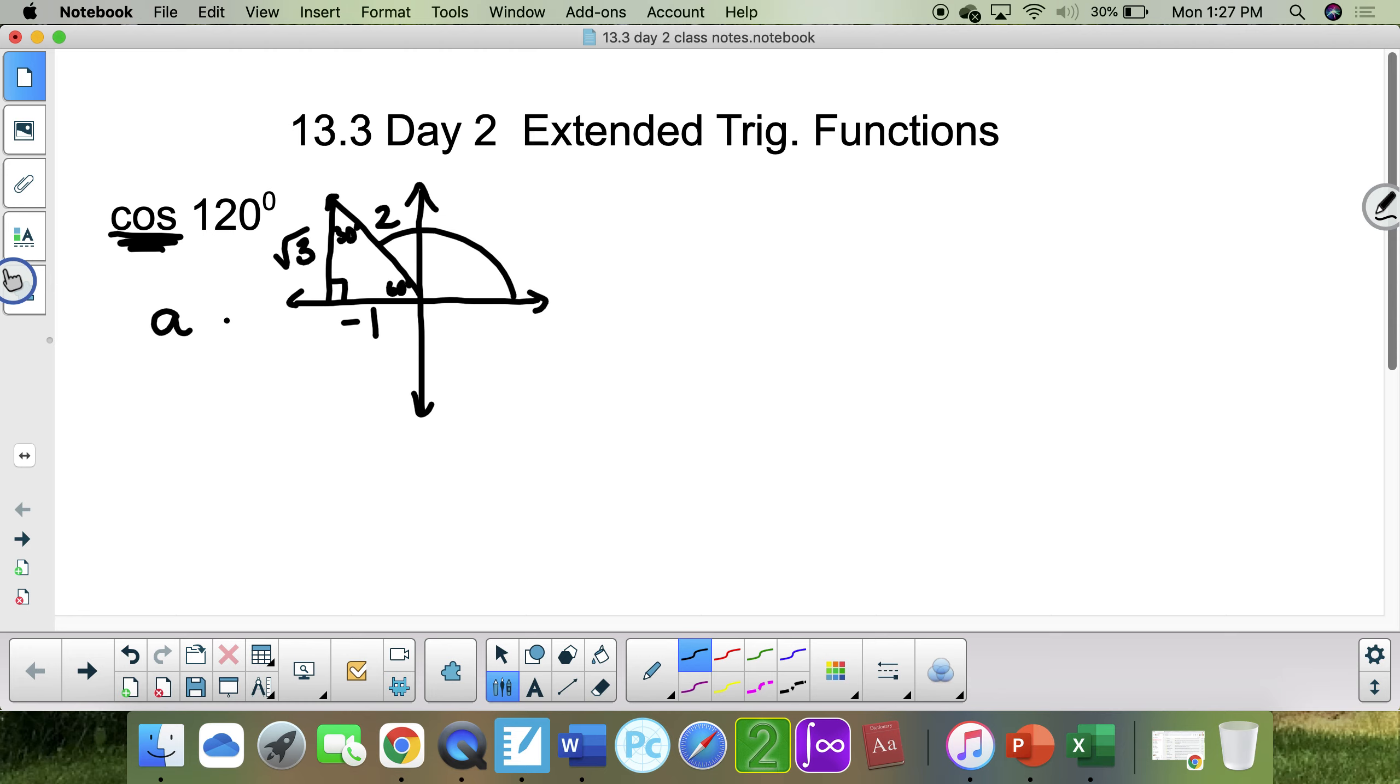Cosine is a over r. Or, the a is x, and it's a over h—sorry, or x over r. And the x is negative 1, and the r is 2. Negative 1 half, final answer. A couple more.